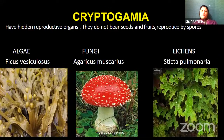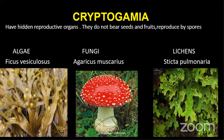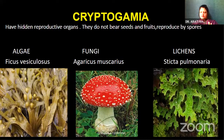Next, we have cryptogamia. What are cryptogamia? They have hidden reproductive organs; they do not bear seeds and fruits, and they reproduce by spores. We have algae, fungi, and lichens. In algae, we have Fucus vesiculosus as an example. In fungi, we have Agaricus muscarius, and we have lichens in the form of Sticta pulmonaria.